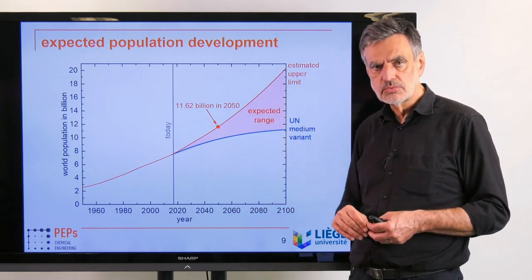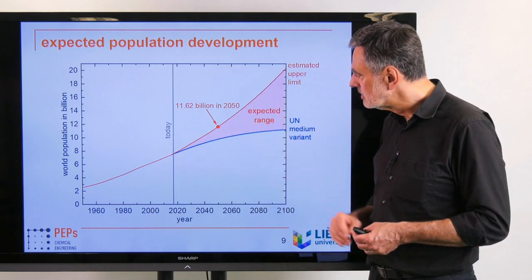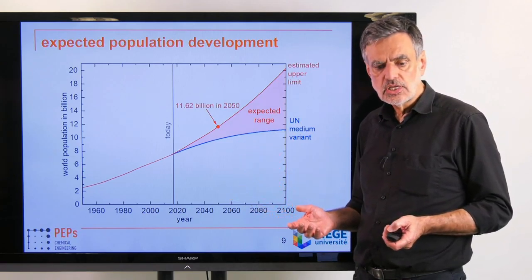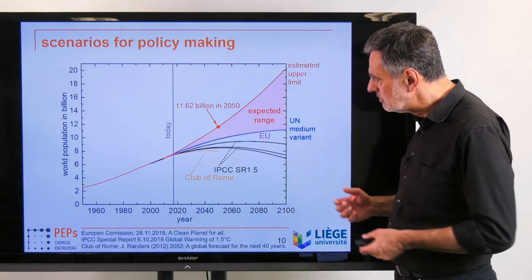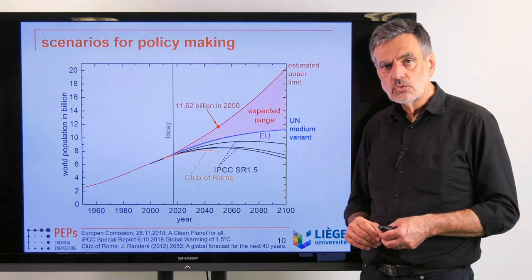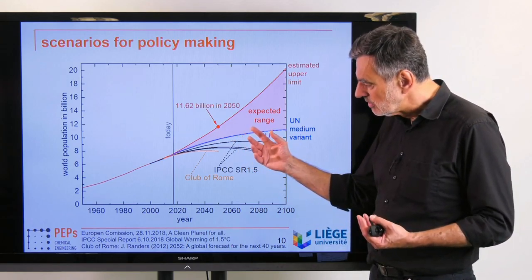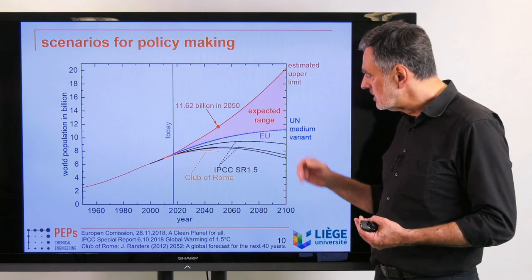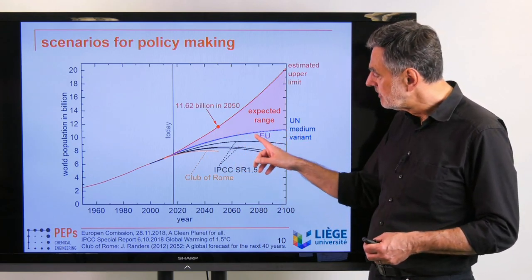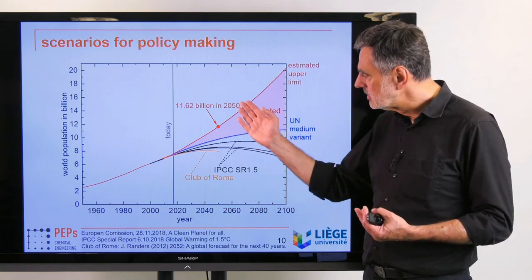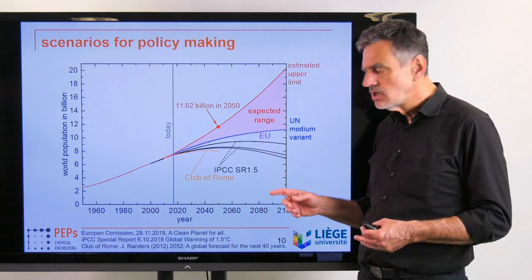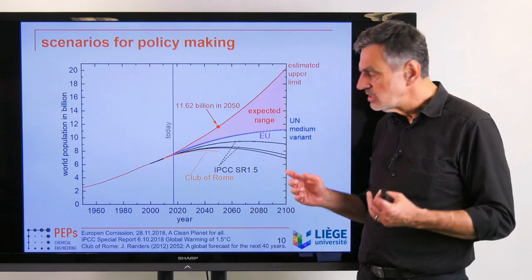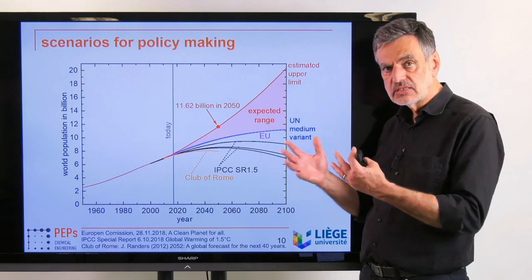That means we have to take scenarios between the medium variant and that extrapolated version into account. This is equally realistic if our increase in knowledge continues as in the past. We would wind up with 11.6 billion people in 2050, compared to the medium variant of 9.8 billion — roughly 2 billion more than today — with a possible additional almost 2 billion more. So there is quite a wide variation possible with respect to world population.